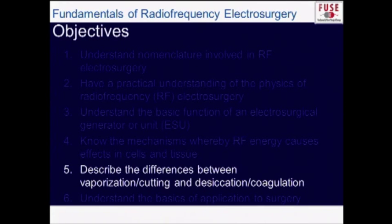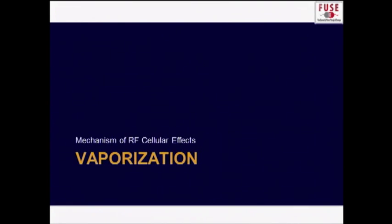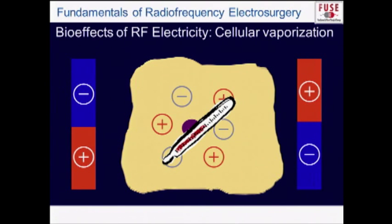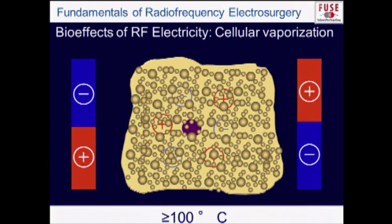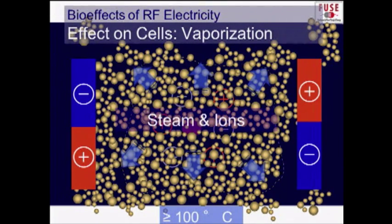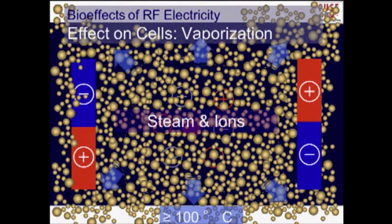With vaporization, temperature is elevated very quickly — above 100°C. The intracellular water undergoes conversion to gas, causing massive volume expansion and damage to the cellular membrane, resulting in vaporization.